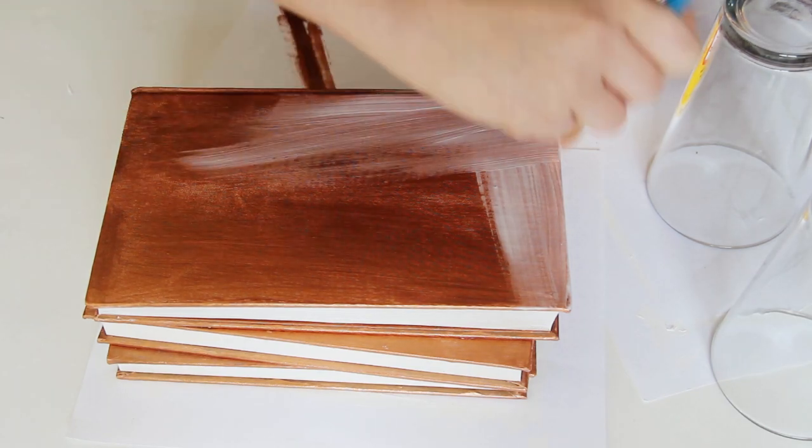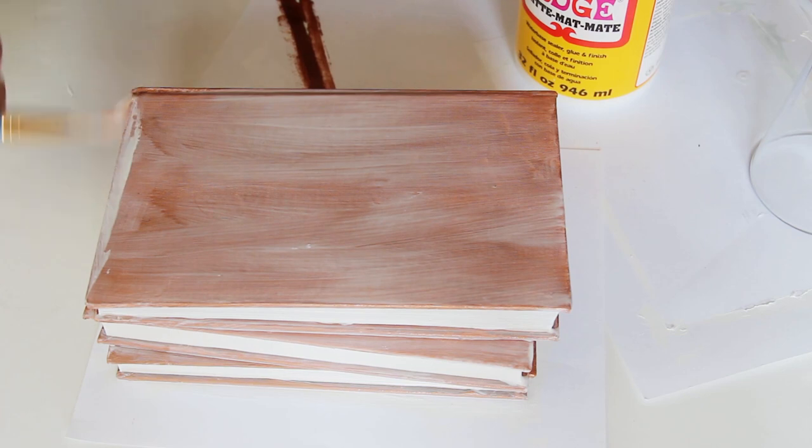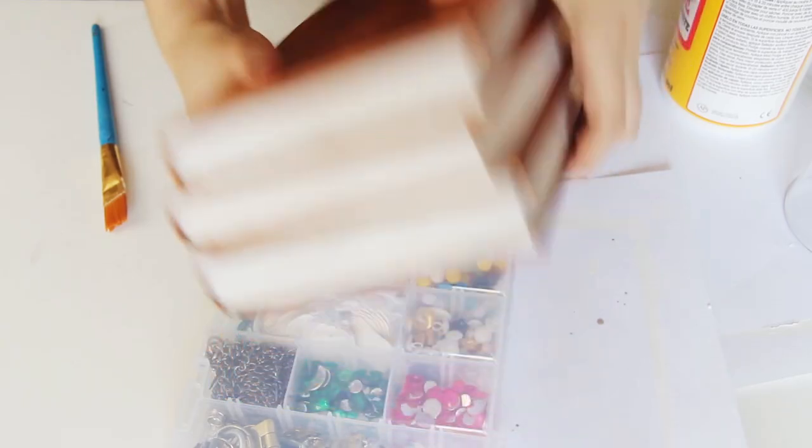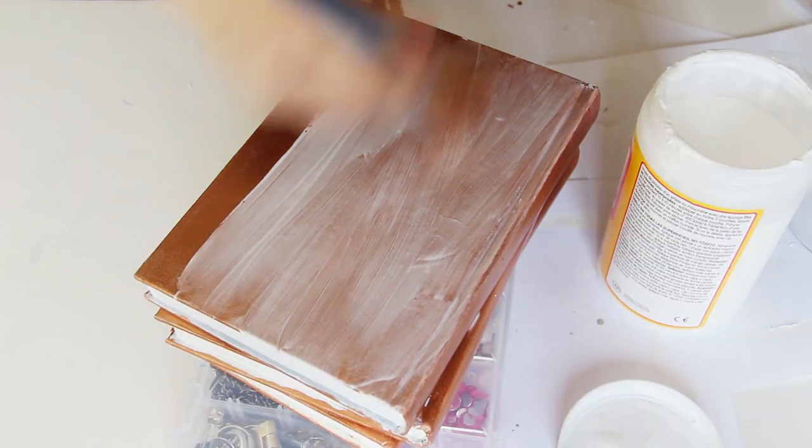So after that I covered the entire thing with Mod Podge in order to really seal the entire thing up and give it a little more durability. Once the first coat was dry I flipped it over so that I could put Mod Podge on the bottom as well.